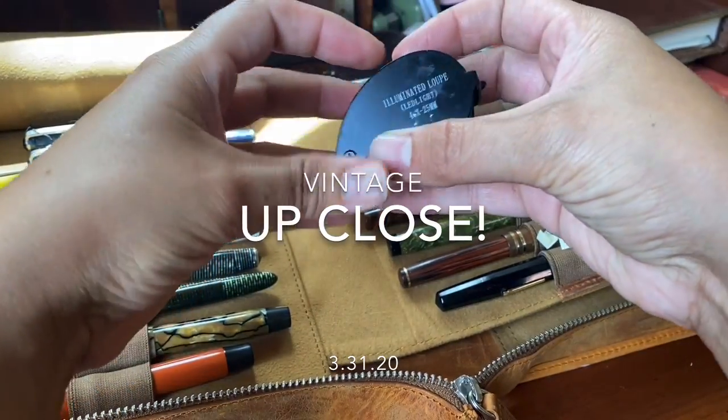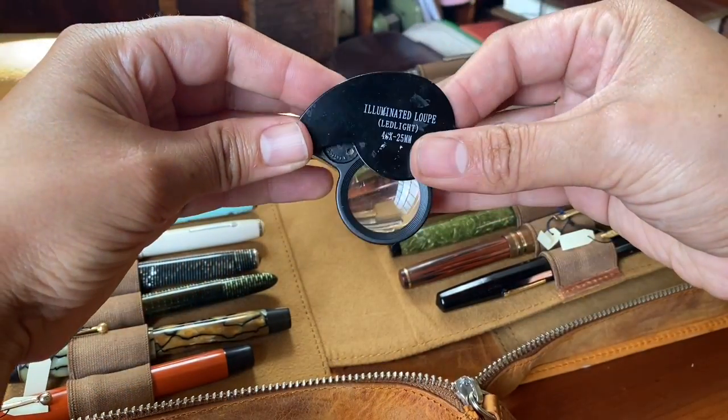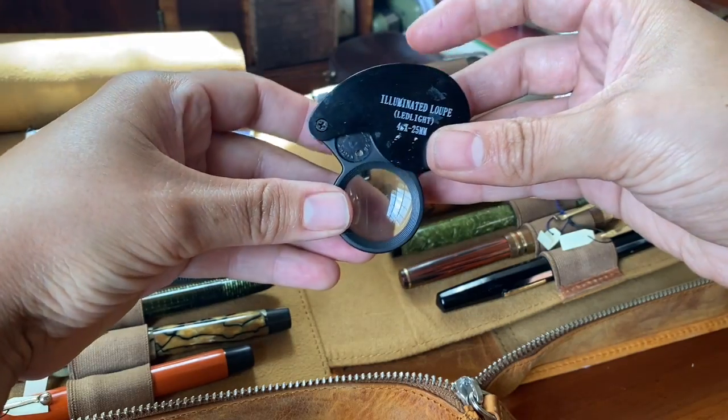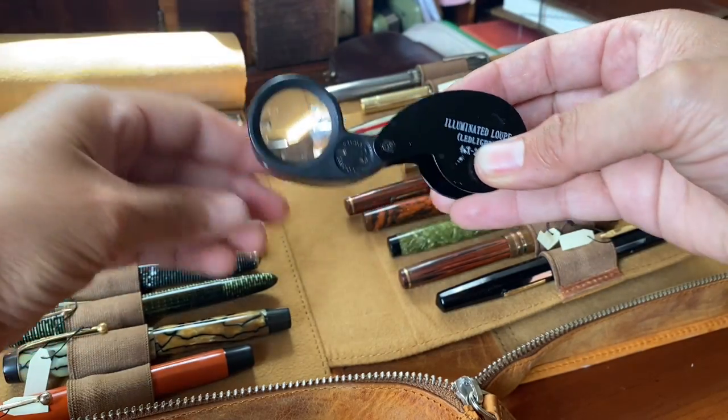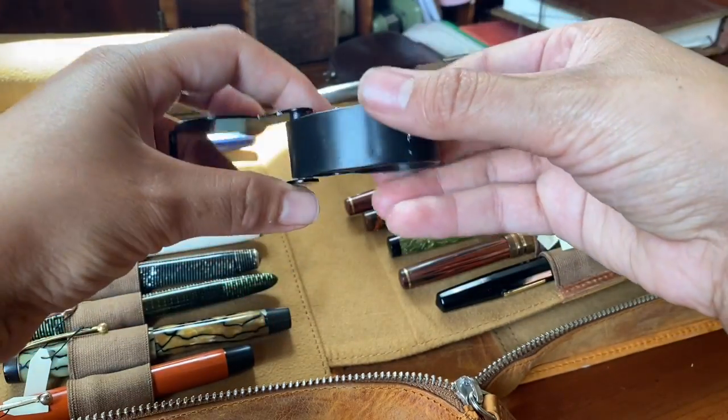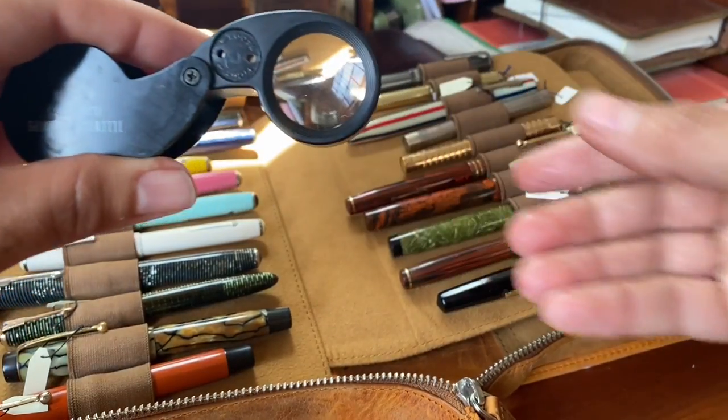Okay, so I have this jeweler's loupe and I recently discovered that you can bring it up close to your camera and actually film through the lens, which just blows my mind. I got really excited because I wanted to look at some of these nibs close up.